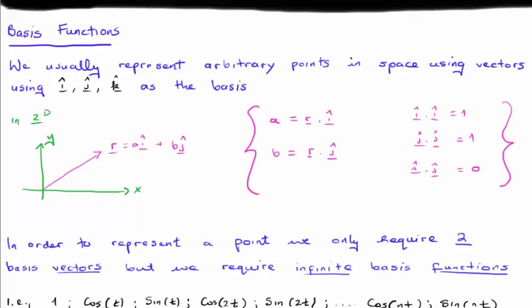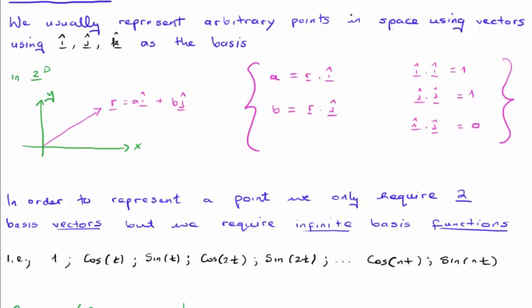In Cartesian space, we usually use the unit vectors i hat, j hat, k hat to represent every point, and they have the following orthogonality properties. They can express every point because they are in fact mathematically and physically orthogonal. As I said earlier on, cosines and sines are mathematically orthogonal and can do the same job.